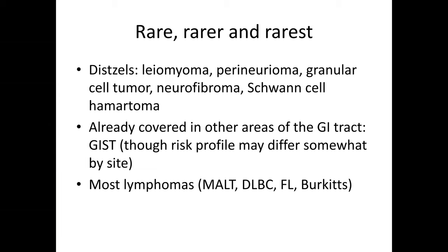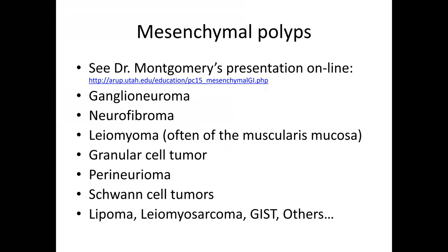We'll start with the leiomyoma, the perineuroma, granular cell tumor, and so forth. I've talked elsewhere about GI stromal tumors, and then we'll touch on the lymphomas and lymphoproliferative lesions that we can encounter in the GI tract. Dr. Elizabeth Montgomery has a great presentation to the AREP meetings in Utah that was quite thorough and comprehensive, so very helpful on this topic.